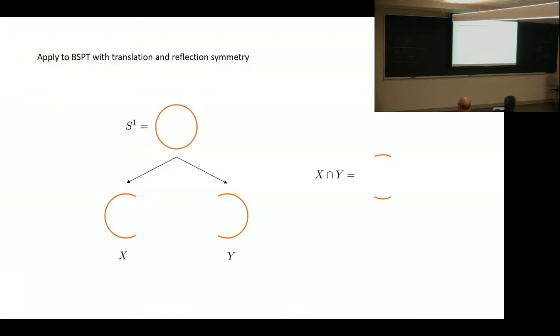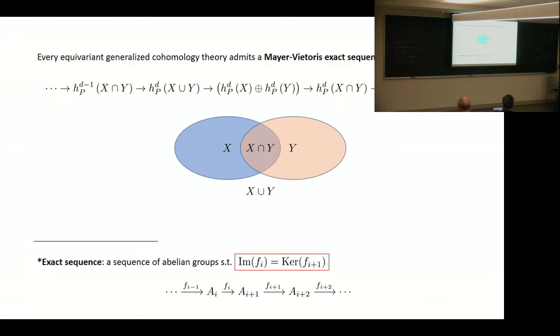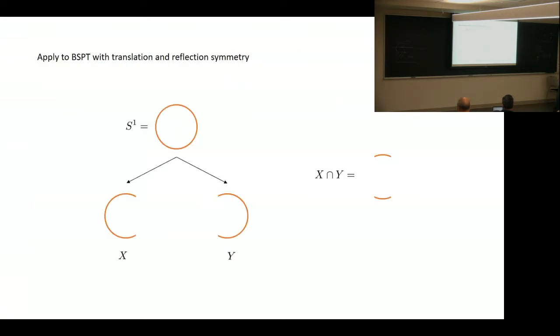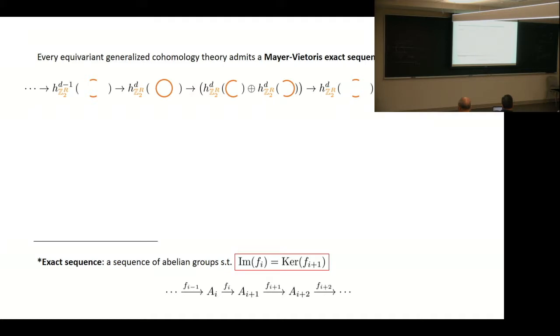In the case of SPT phases with translation and reflection symmetry, recall we have S^1, which is the circle. We will apply the Mayer-Vietoris sequence by decomposing the circle into two semicircles, X and Y, and the intersection of X and Y is something like that. We can plug this into the Mayer-Vietoris sequence. We will replace X by this semicircle, Y by that semicircle, and the other terms accordingly. We will also replace the point group P by Z_2 reflection. We do some substitution.